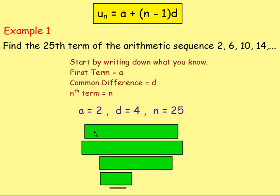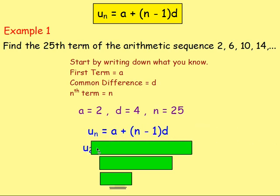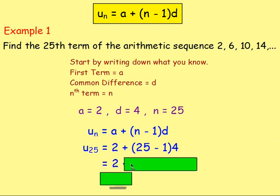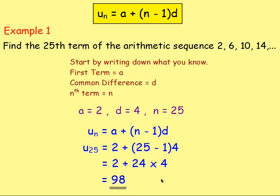So our formula is u-n equals a plus (n minus 1) times d. We want u-25. That equals a, which is 2, plus (n minus 1) times d — n is 25, so that's 25 minus 1, which is 24, multiplied by d, which is 4. That's equal to 2 plus 24 times 4. Work that out and you get 98. That's your answer.